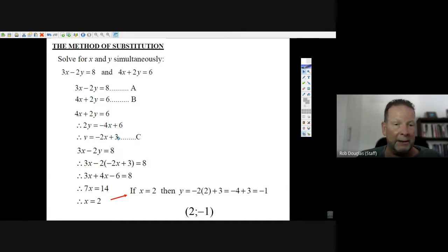y equals minus 2x plus 3. Now we're going to substitute minus 2x plus 3 into the other equation. So we write down the other equation, equation A, and instead of y, we put minus 2x plus 3.